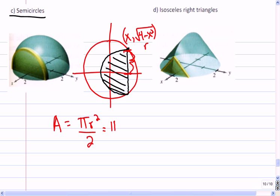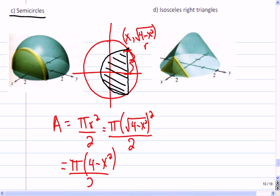So this is going to be pi times the square root of 4 minus x squared, all squared, divided by 2. And that gives me an area, which is pi times 4 minus x squared, all over 2.